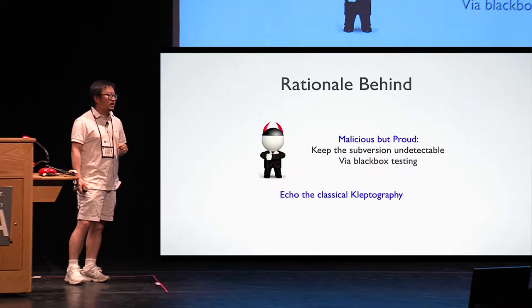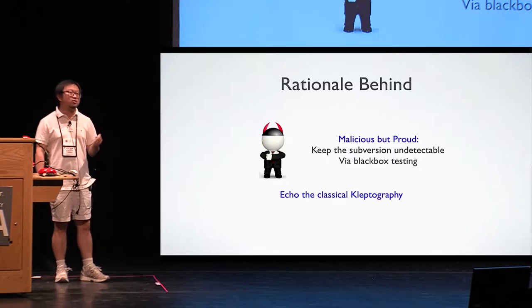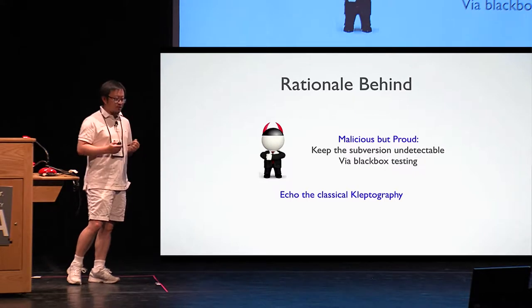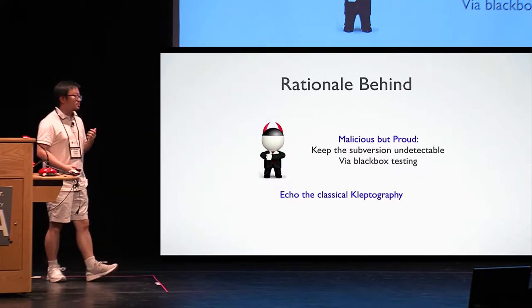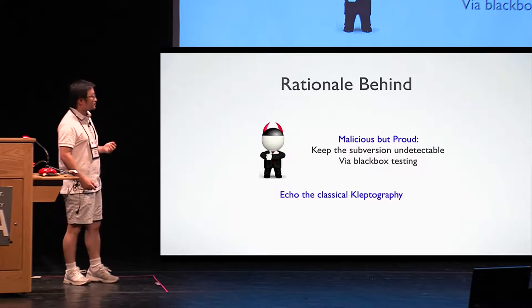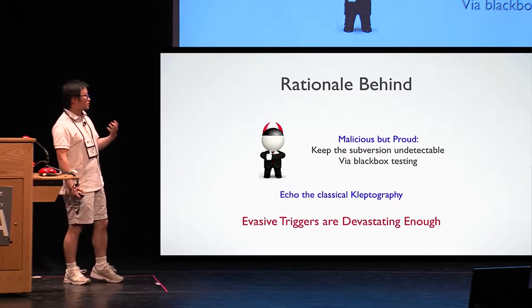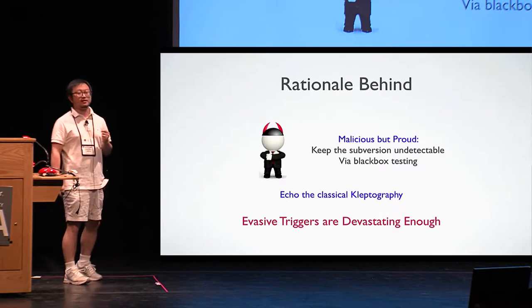And we call such kind of attacker malicious but proud. And this also echoes the classical theory of kleptography, in which the adversary tries to steal information via subverted implementation, but won't steal in a subliminal way.